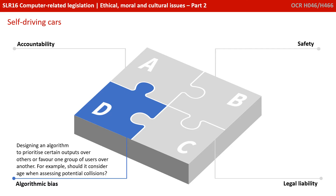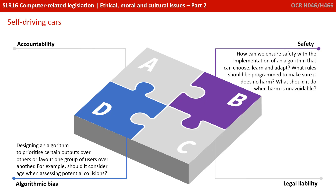So what do we mean by algorithmic bias? This is when we're designing an algorithm and it prioritises — either on purpose or by accident — certain outputs over others, or favours one group of users over another. For example, should it take into consideration age when assessing potential collisions? Regarding safety: how can we ensure safety with an algorithm that can choose, learn and adapt? What rules should be programmed to make sure it does no harm, and what should it do when harm is unavoidable?